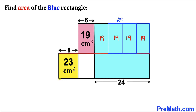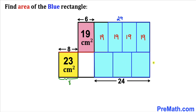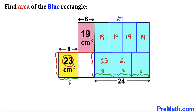The horizontal length of the yellow rectangle is 8 centimeters. So the lower portion of the blue rectangle can be divided into three equal parts, each of side length 8 centimeters. Since this height is the same as the yellow rectangle's height, the area of each of these three parts equals 23 cm².